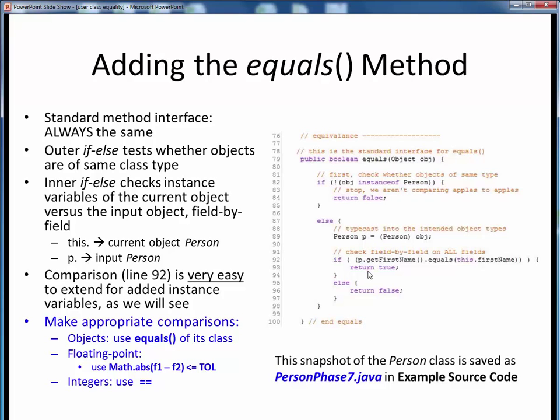Finally, in this inner if-else branch, we begin checking individual instance variables against each other. To make what's what very clear, we're going to preface each instance variable as follows.